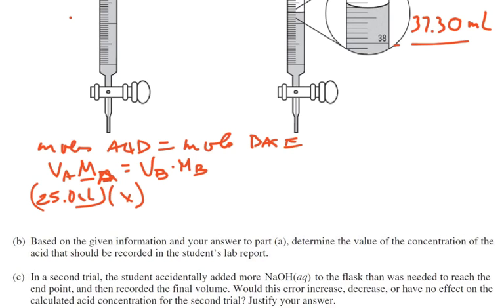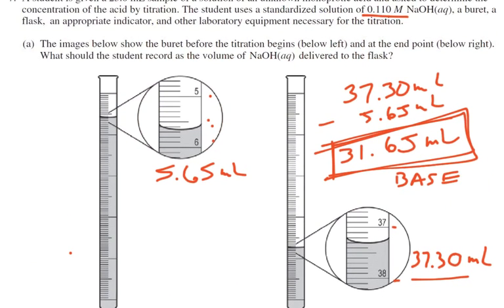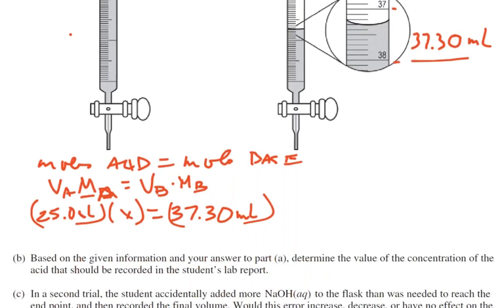Okay, x, and we want the volume of the base. We just said it was 37.30 milliliters, and it said up here in the problem that it was a 0.110 molar solution of the base, NaOH. So we solve for x, and x comes out to be 0.139 molar.